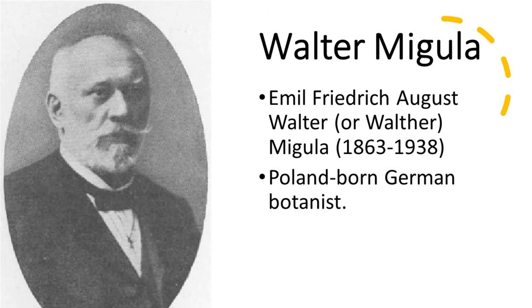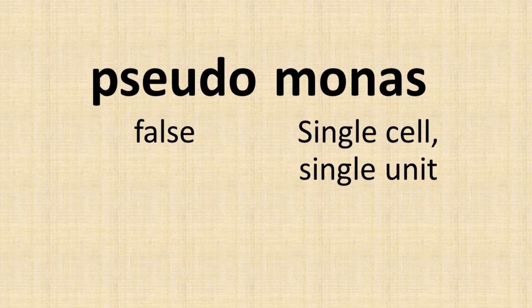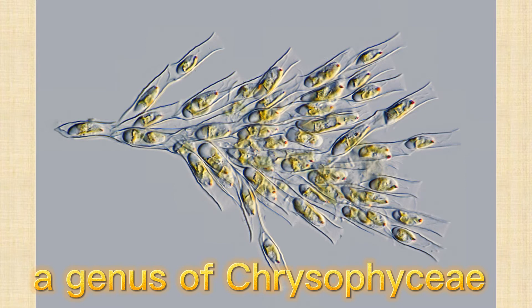The name Pseudomonas was given by German botanist Walter Migula in 1894. The word 'pseudo' means false and 'monas' means single cell or single unit. Walter didn't give a reason for why he chose such a name, so the best guess is that he saw the bacteria as a false monas, in which monas is another kind of microorganism.